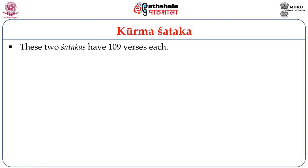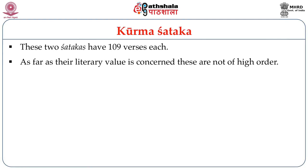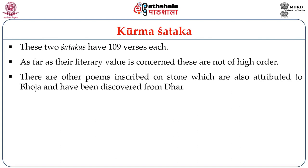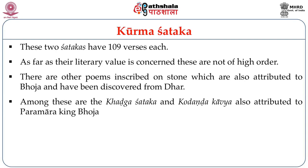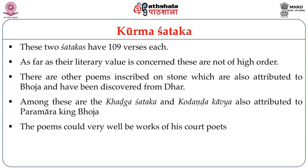Shattakas basically mean a set of 100 Shlokas, but here each poetry has 109 Shlokas — the reason for the additional 9 is not known. As for literary value, these are not of high order — they are mediocre compositions. Other poems inscribed on stone attributed to Bhoja include the Kharga Shattaka and the Kodanda Kavya. The poems could very well be the work of his court poets, and the language is basically Maharashtri Prakrit.